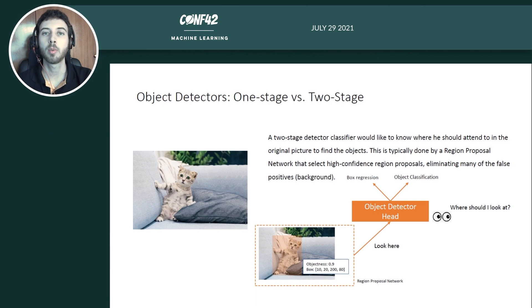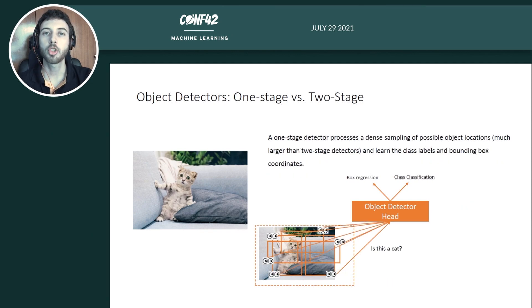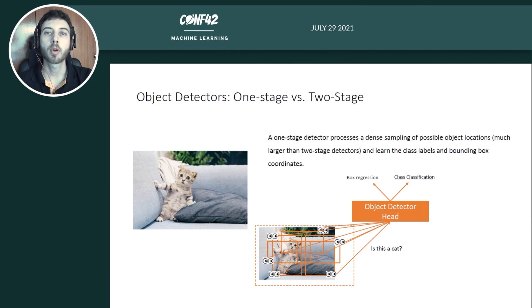By doing so, it will have a much smaller set of candidate regions that might contain an object, and this will eliminate many of the false positives that we would have otherwise. A one-stage detector, on the other hand, generates a dense sampling of possible object locations with different shapes and aspect ratios, and processes them directly to learn class labels and bounding boxes.